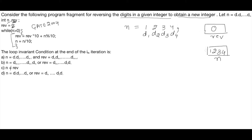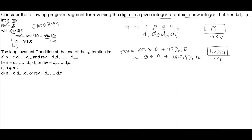n is greater than 0 because we have taken n as 1234. Inside the loop: REV = REV * 10 + n % 10. The modulo operation gives the remainder when dividing n by 10. Initially REV is 0, so REV = 0 * 10 + (1234 % 10) = 0 + 4 = 4. Therefore the value 4 is stored in REV.